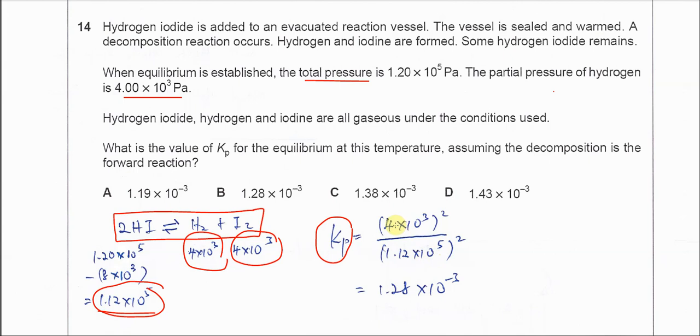So it's going to be 1.28 times 10 to the negative 3. So answer is B. Thank you.